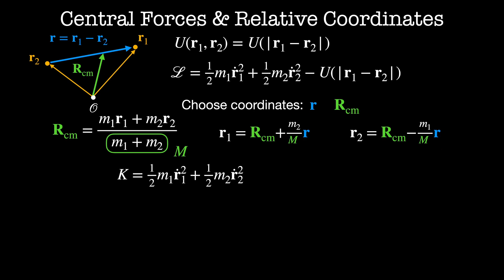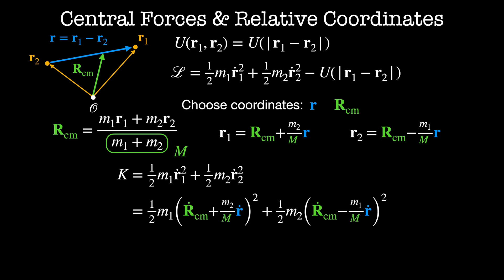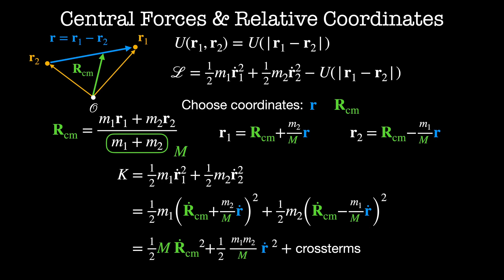Then we'll use these definitions to rewrite the kinetic energy, which was one-half m1 r1-dot squared plus one-half m2 r2-dot squared, as one-half m1 times (rcm-dot plus m2 divided by the total mass times r-dot) squared plus one-half m2 times (rcm-dot minus m1 over the total mass times r-dot) squared. When we expand this out, we end up with one-half the total mass times rcm-dot squared plus one-half m1 m2 divided by the total mass M times r-dot squared, plus cross terms — but the cross terms cancel out. This term m1 m2 divided by the total mass shows up a lot, so we're going to call it mu, the reduced mass.